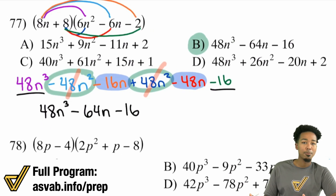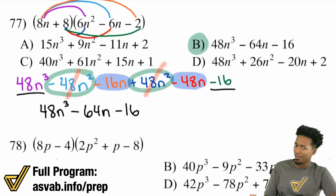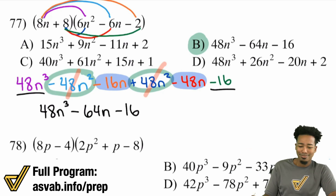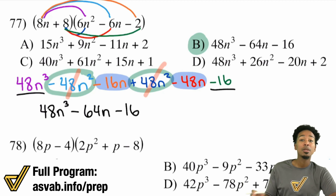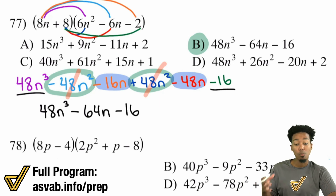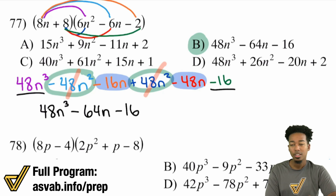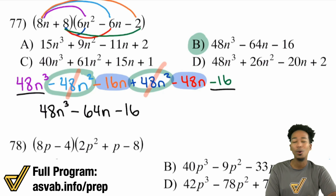Does this seem much different than the previous video where we had two by two? Now we have a two by three, and nothing changes. It's the same exact idea — make sure that everything from one parenthesis multiplies with everything from the other. Work it out that way and you're golden every single time.